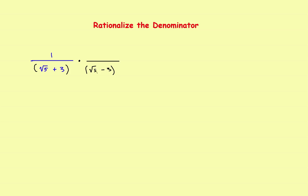Remember, you can't just multiply the denominator alone. Whatever you do to the bottom, you've got to do the same thing to the top. So we'll also multiply the top by the square root of 5 minus 3. This thing over this thing is just basically 1, so you're multiplying by 1 and it doesn't change anything.